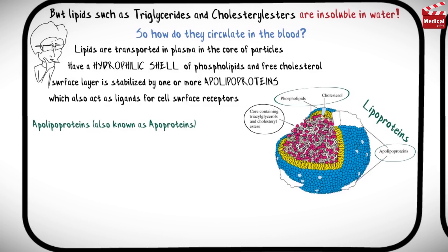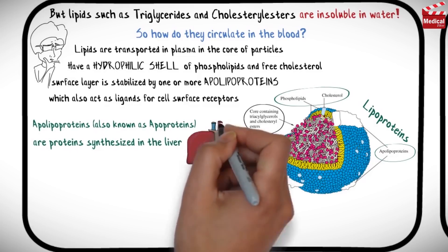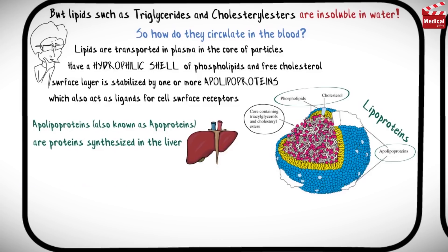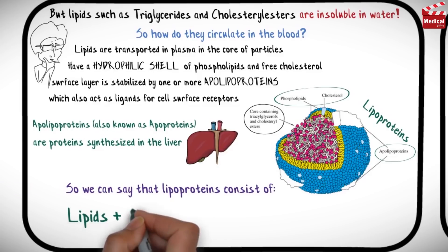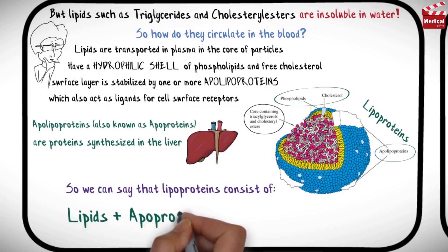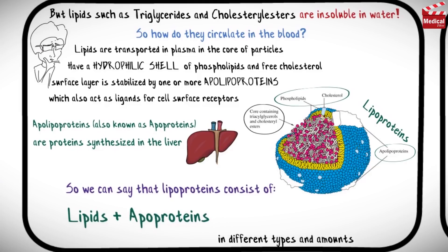Apolipoproteins, also known as apoproteins, are proteins synthesized in the liver. So we can say that lipoproteins consist of lipids and apoproteins in different types and amounts.